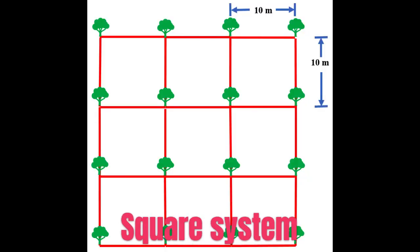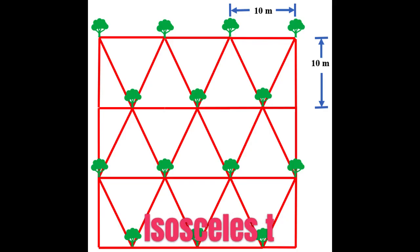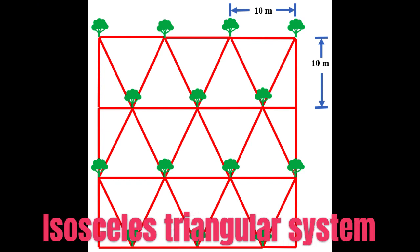In the square system, the area is divided into square grids and crops are planted at all the corners of the squares. The plant population in this system is calculated by dividing the area by the planting distance.